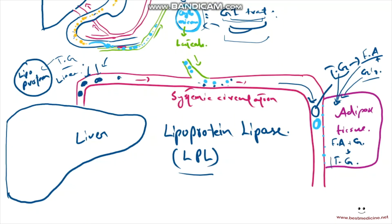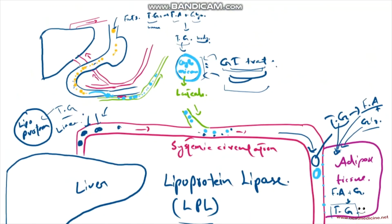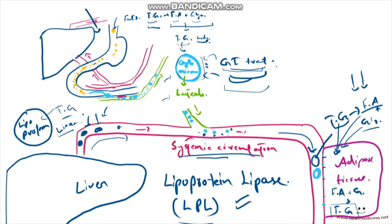Inside the adipose tissue, the fatty acids and glycerol are reformed into triglycerides and stored — that's how triglycerides are stored in adipose tissue. To summarize: dietary triglycerides are digested by lipases in the intestine into fatty acids and glycerol, absorbed, converted into triglycerides, and packaged into chylomicrons. Chylomicrons enter the lymphatics and then systemic circulation. Similarly, liver-synthesized triglycerides travel in lipoproteins into systemic circulation. Both are broken down by LPL at adipose capillary beds, absorbed as fatty acids and glycerol, and reformed into stored triglycerides.